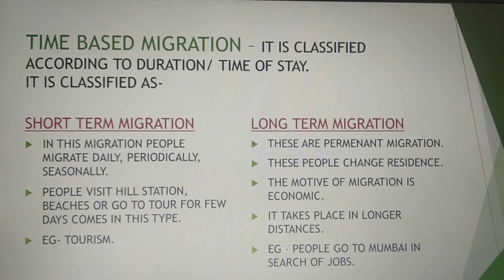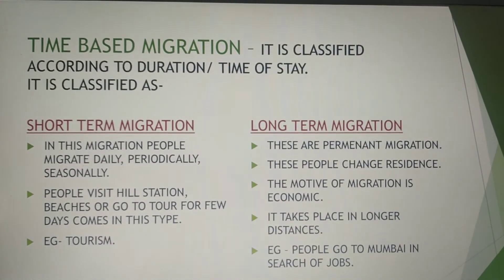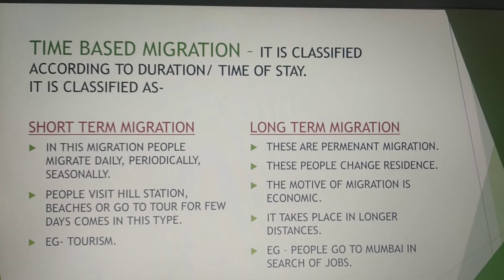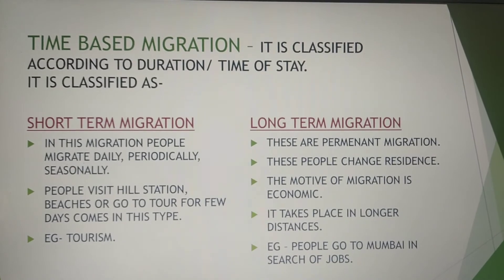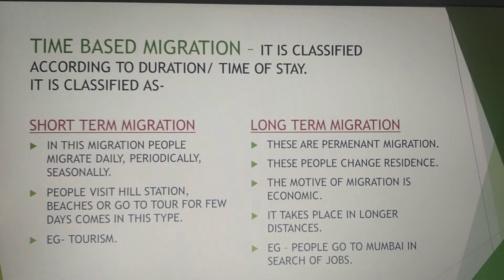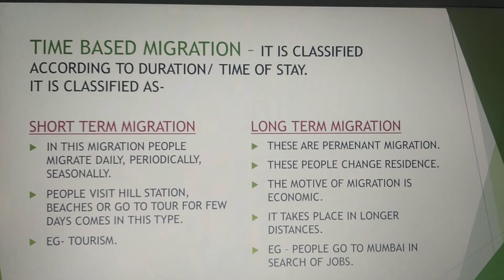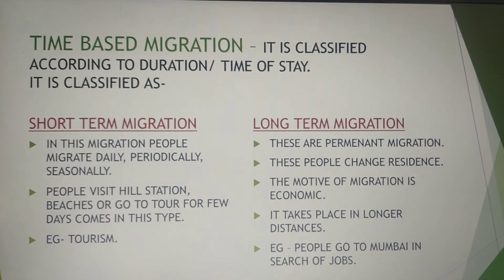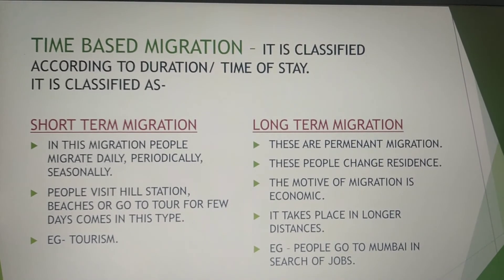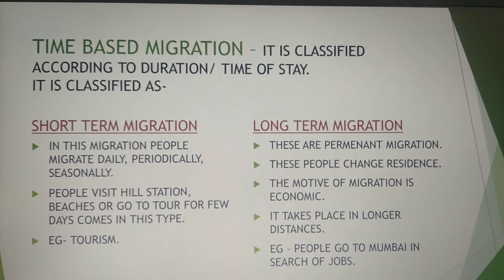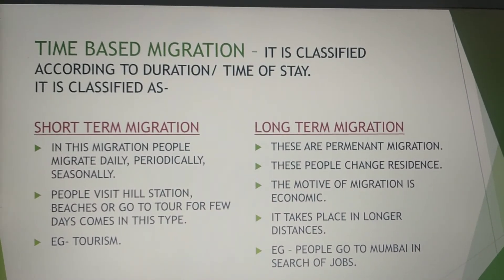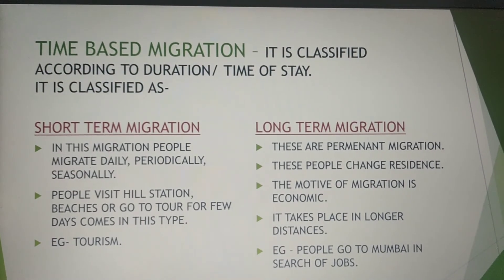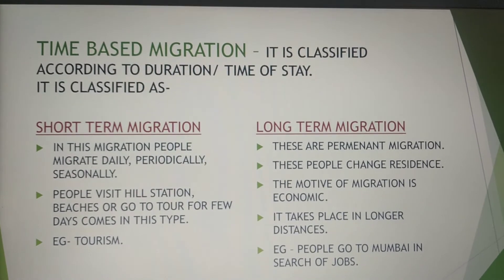Opposite to short-term migration is long-term migration. Long-term migration is for a longer period and is considered permanent migration. These people change residence; the motive is economic, and it takes place over longer distances. Once they move from their origin to their destination, they don't come back to their origin.